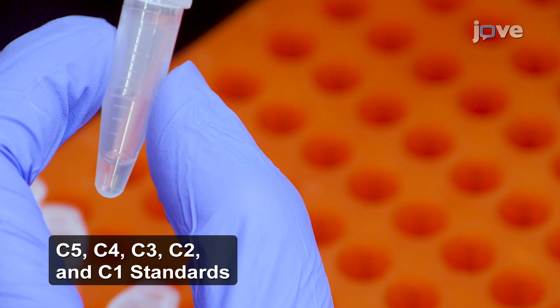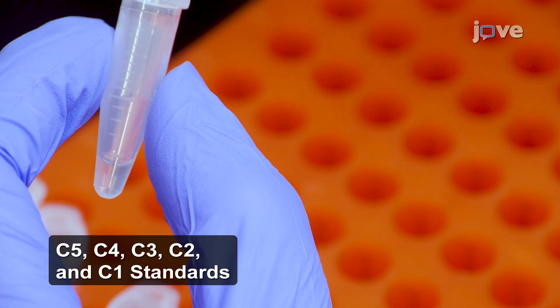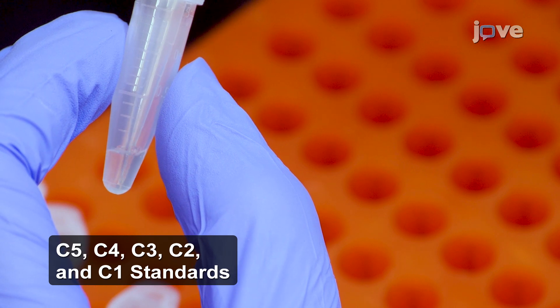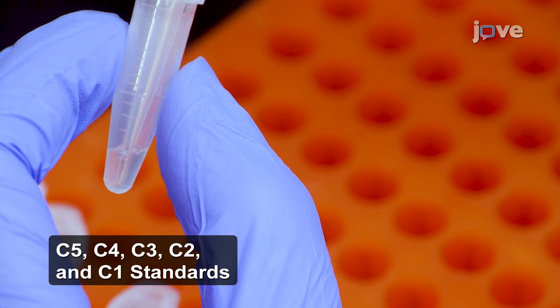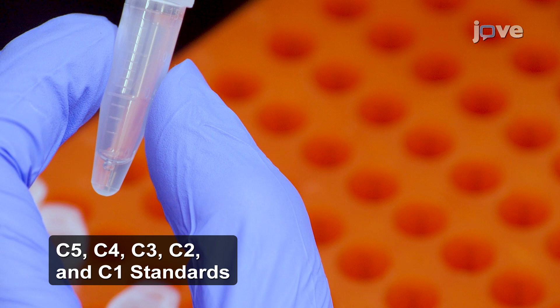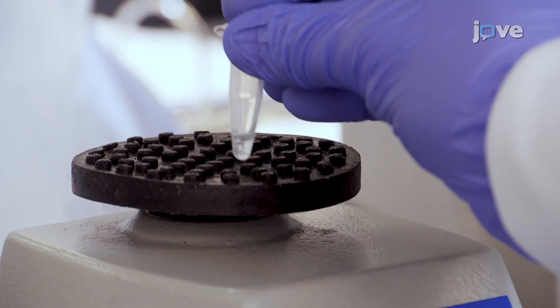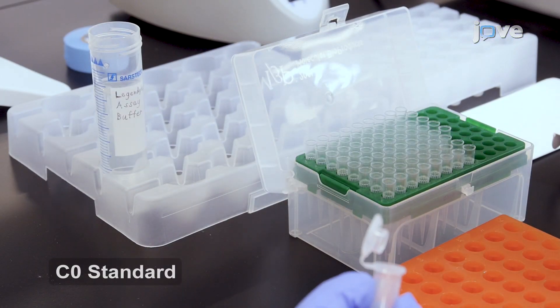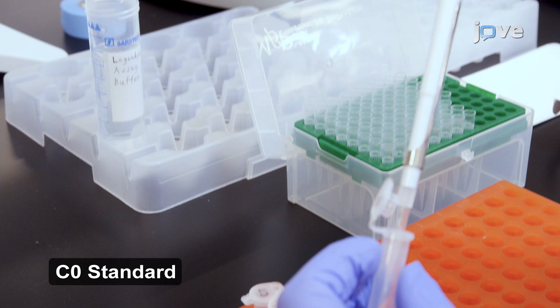Continue performing serial 1 to 4 dilutions by using a new pipette tip for each tube to add 25 microliters of the previous standard to the 75 microliters of assay buffer in the next lowest standard tube. Follow each addition by vortexing. Use assay buffer as the zero picograms per milliliter standard.